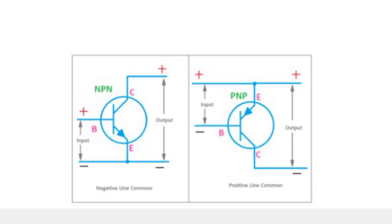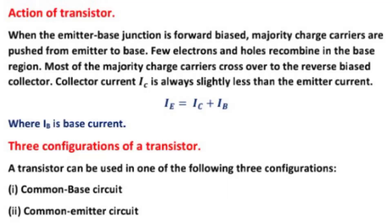Action of transistor. When the emitter base junction is forward biased, majority charge carriers are pushed from emitter to base. Few electrons and holes recombine in the base region. Most of the majority charge carriers cross over to the reverse biased collector. Collector current IC is always slightly less than the emitter current IE. Therefore IE equals IC plus IB, where IB is the base current.